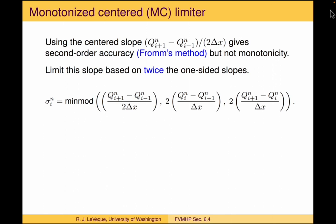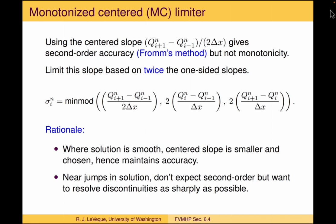Here's the formula for the MC limiter. We look at the centered slope, which is Fromm's method if we just use it everywhere. But we apply a limiter based on twice the one-sided slope to the left and twice the one-sided slope to the right. We look at all three quantities and take the min-mod of those — meaning if they all have the same sign, we take the smallest in magnitude. If there's any difference in sign, we set the slope to zero because we're near a maximum or minimum. Where things are smooth, the centered slope gives us second-order accuracy, but near a discontinuity we limit it, but no more than absolutely necessary.